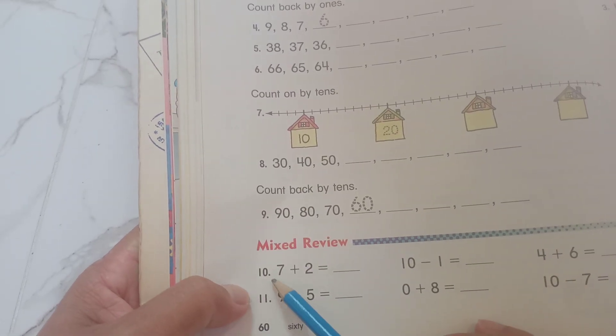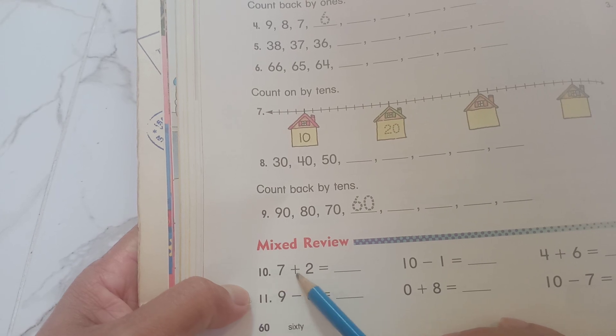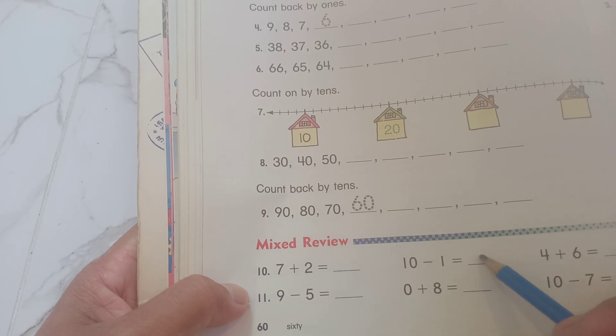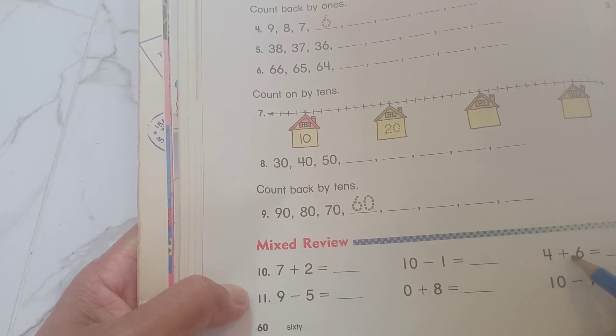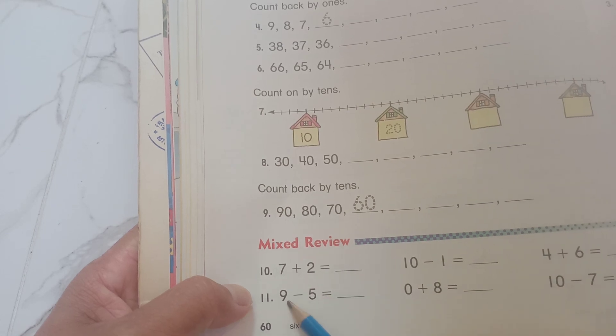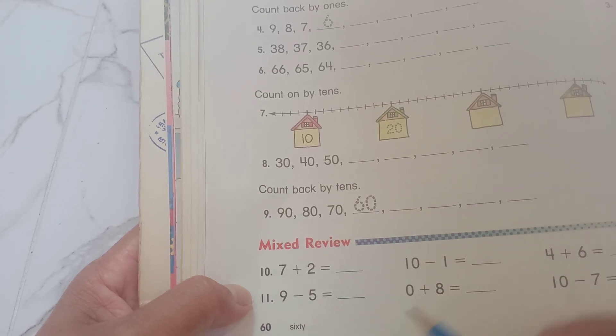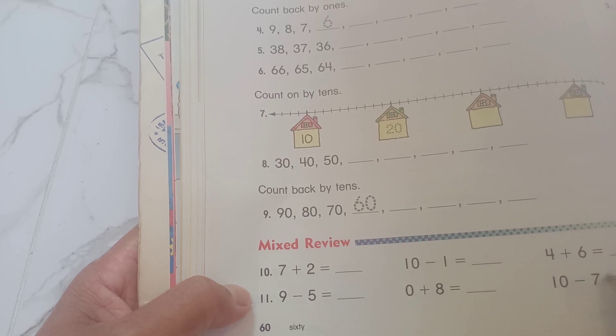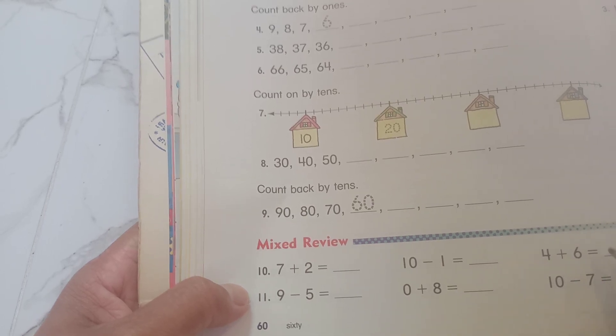Mixed review: 7 plus 2 equals 9. 10 minus 1 equals 9. 4 plus 6 equals 10. 9 minus 5 equals 4. 0 plus 8 equals 8. 10 minus 7 equals 3.